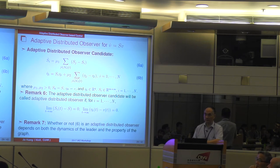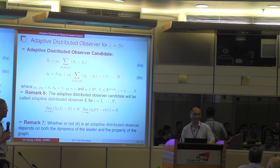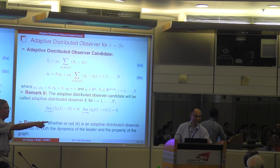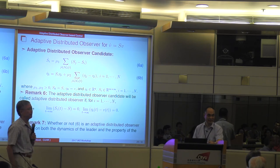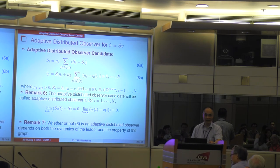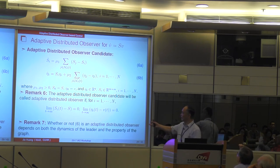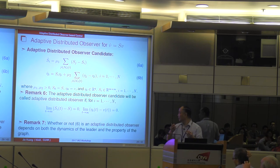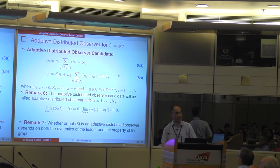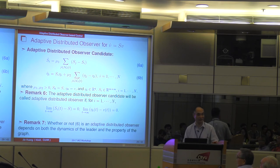One more question from a student: are there new directions to improve the adaptive distributed observer? There are many things I don't have time to discuss. For example, here we assume the leader system is linear, but we can extend it to a nonlinear leader system. We have also not considered time delay or communication delay, which we can take into account in the future.